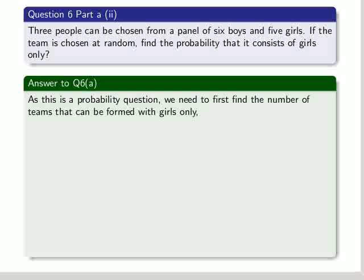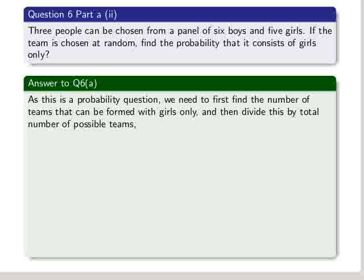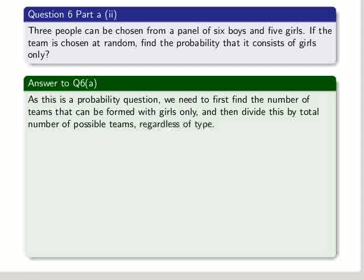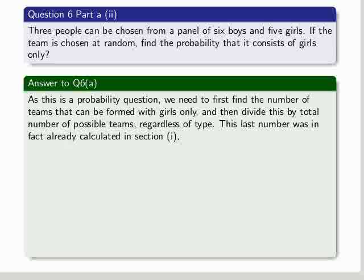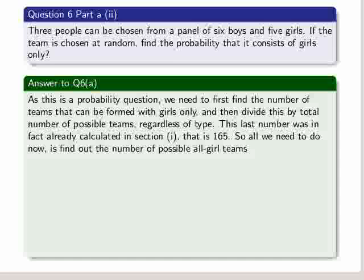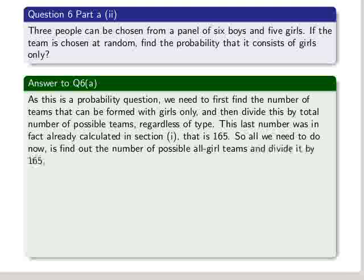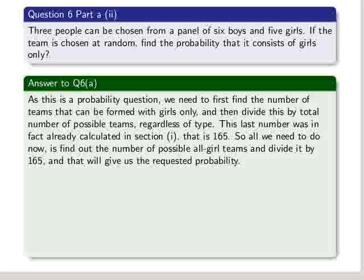We first need to find the number of teams that can be formed with girls only and then divide this by the total number of possible teams regardless of type, which we already have. This last number was, in fact, calculated in section 1. It was 165. So all we need to do now is find the number of possible all-girl teams and divide it by 165, and that will give us the requested probability.